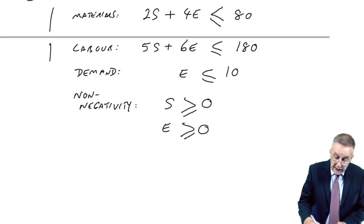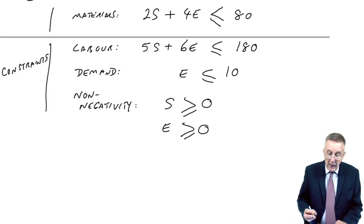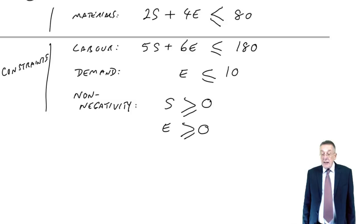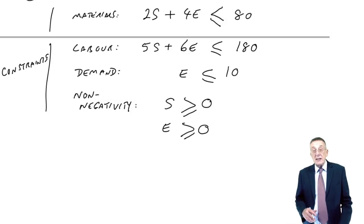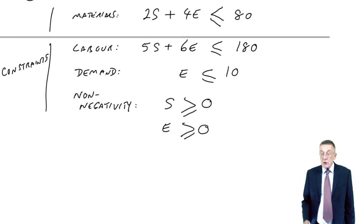So there we are. We've written equations for our limitations or another word is constraints. And whatever answer we end up with for S and E, each of those inequalities must hold true.